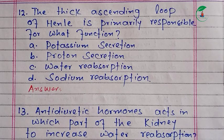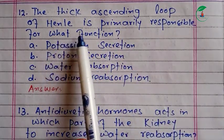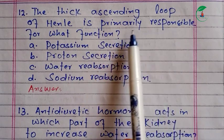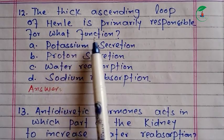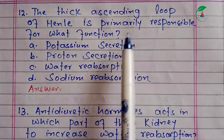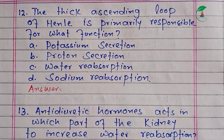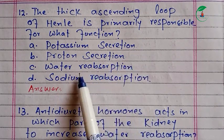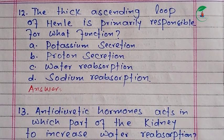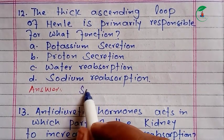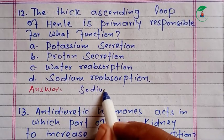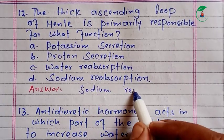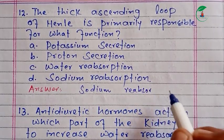The thick ascending loop of Henle is primarily responsible for what function? As an ascending loop, the loop of Henle is responsible for the urinary system. The options are potassium secretion, proton secretion, water reabsorption, or sodium reabsorption. The loop of Henle is responsible for sodium reabsorption.